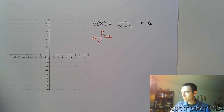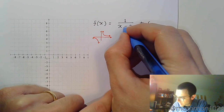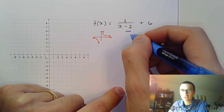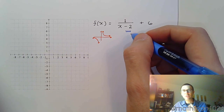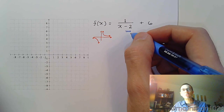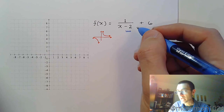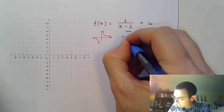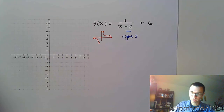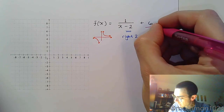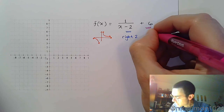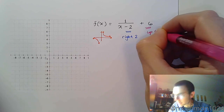So what's been done to this function? In the denominator I see minus 2. It's inside the fraction, which means it's inside the main part of the function that gives us our shape, so we shift left or right doing the opposite of what we see. I see a minus 2, so I'm actually going to shift to the right two units. And then whatever I see outside of the fraction, I'm going to do a vertical shift exactly as shown — so that means I'm going to go up 6 units.